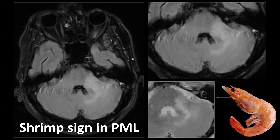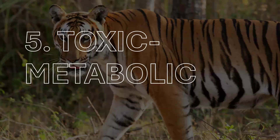The shrimp sign is also described in PML: the middle cerebellar peduncles are a preferred PML location, and edema can extend along the dentate nucleus. Since the dentate nucleus is gray matter it is relatively spared, and the edema surrounding it can look like a shrimp. Personally, I think this is less useful and less specific than the milky way sign. That concludes our discussion of signs in infectious and inflammatory disorders.